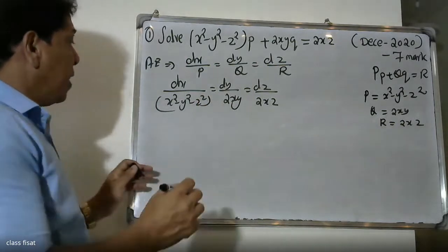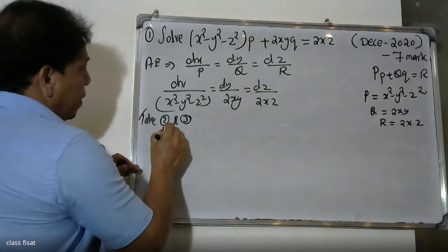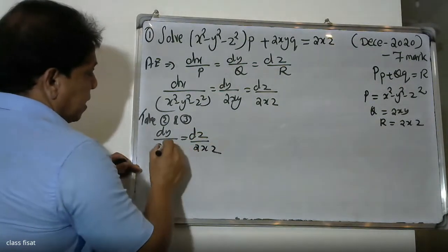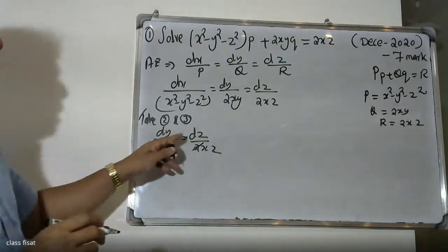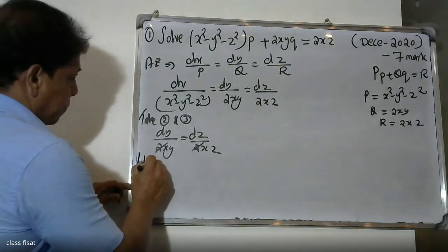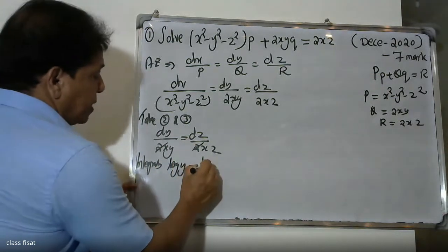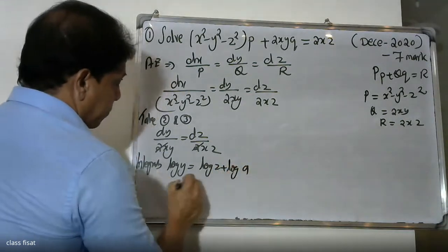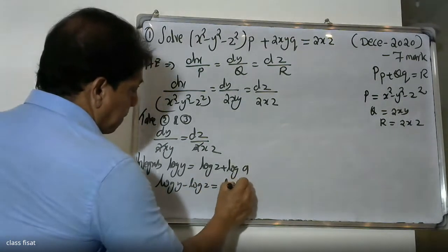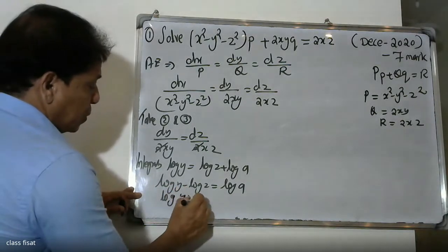Taking ratios 2 and 3: dy divided by 2xy equals dz divided by 2xz. The 2x cancels from both sides, giving dy/y = dz/z. Applying the variable separable method, we integrate both sides. Integrating dy/y gives log y, and integrating dz/z gives log z.